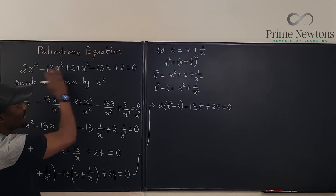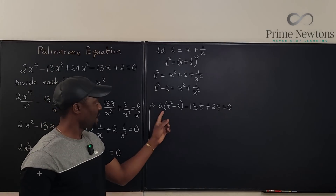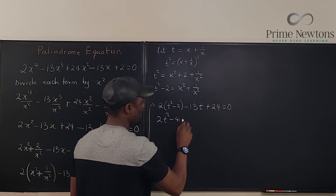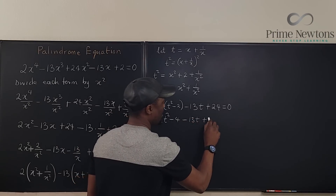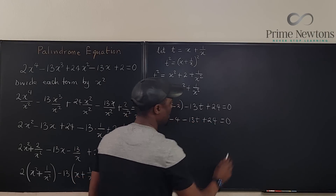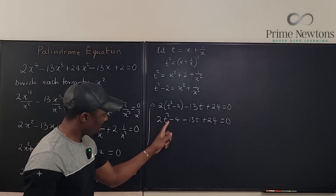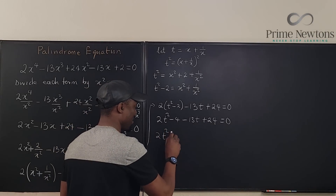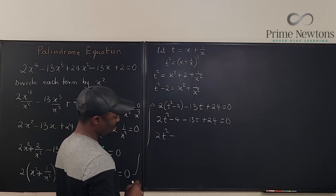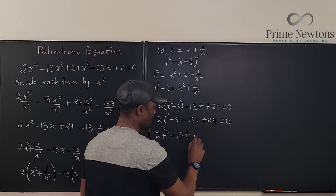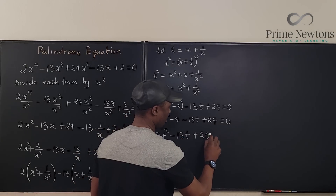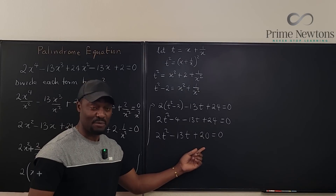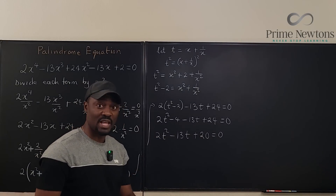We have transformed the quartic into a quadratic. Distributing gives 2t² - 4 - 13t + 24 = 0, which simplifies to 2t² - 13t + 20 = 0. To factor this, multiply 2 by 20 to get 40, and find two numbers that multiply to 40 and add to -13: that's -8 and -5.